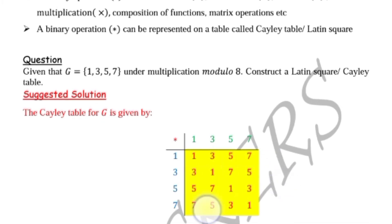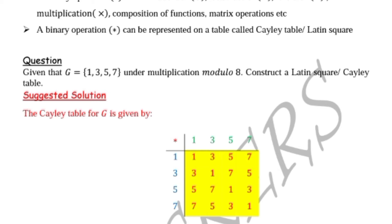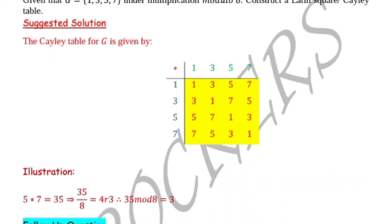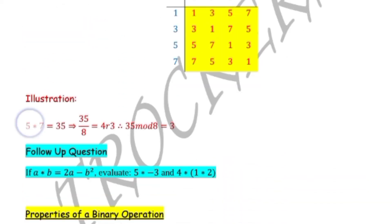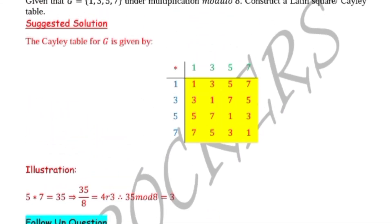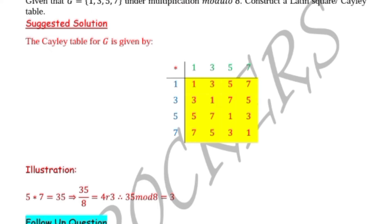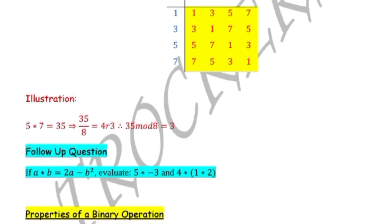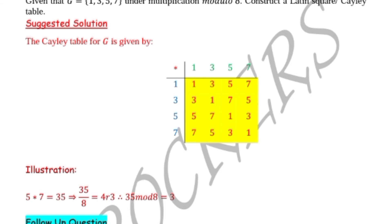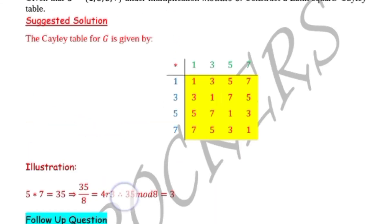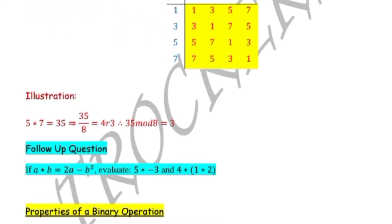For example, 5 star 7: we have 3 here. So 5 star 7 equals 35, because it's 5 times 7. Then modulo 8 — we divide by 8 — we get 4 remainder 3.